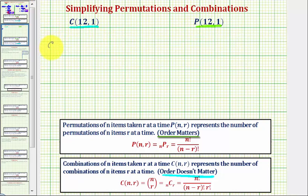So for 12 choose 1, notice how n is 12 and r is 1. So we would have n factorial, or 12 factorial, divided by n minus r factorial, that would be 12 minus 1 factorial, times r factorial, which is 1 factorial.